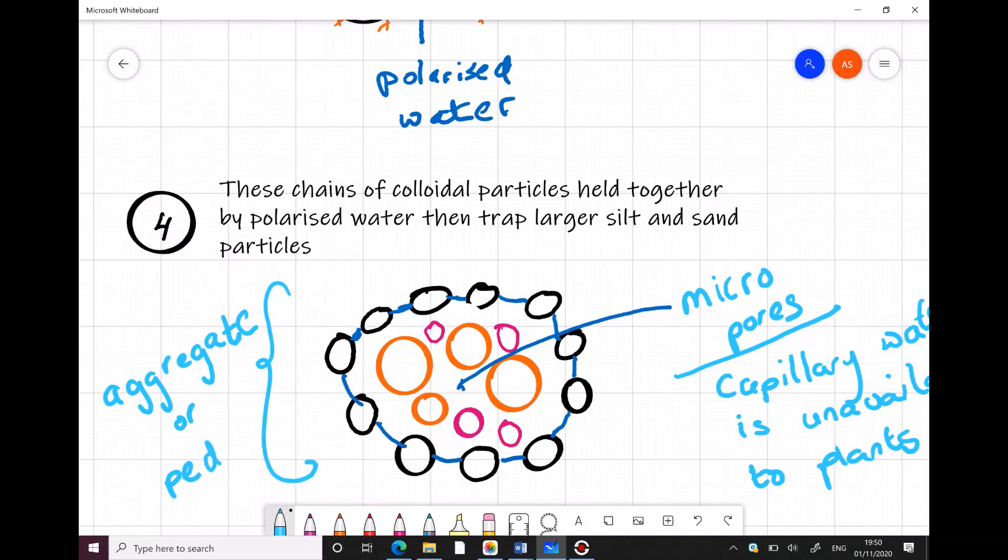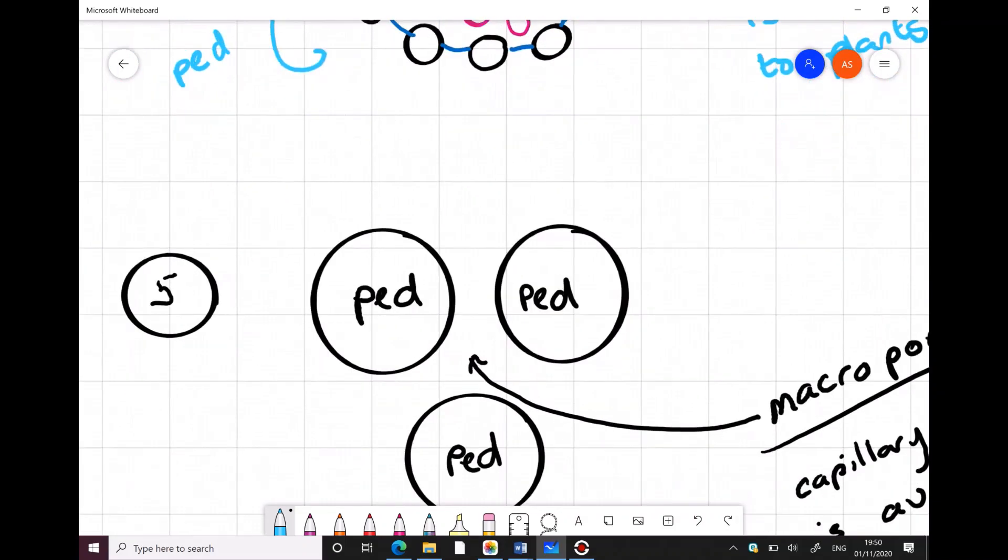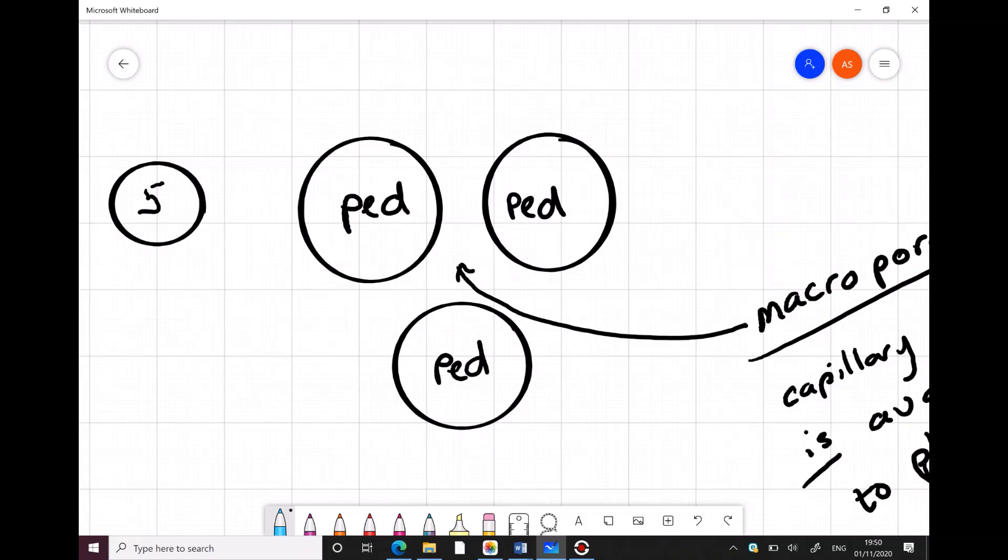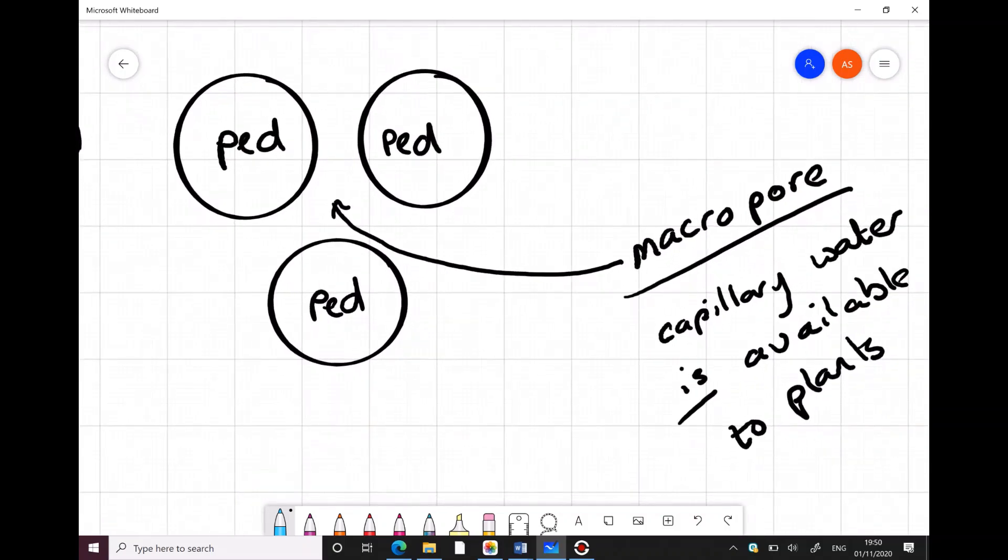And inside this aggregate, you can see small spaces and they're known as micropores. Now capillary water found in these micropores is unavailable to plants. But when you get these crumbs or aggregates together, they form groups of aggregates, but they have in between them pores called macropores. Macropores and the capillary water is available to plants in here.